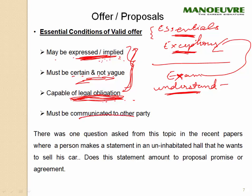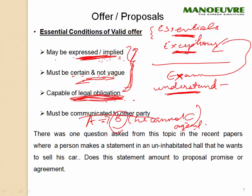The offer must also be communicated to the right party. If A wants to deal with B, he cannot communicate the offer to C — he has to communicate to B only, unless there are exceptions, such as C being an agent of B. There was a recent exam question where A communicated to B 'I will buy your flat,' and B gave his assent through C, who was an appointed agent. The question was: is this acceptance valid? The answer was yes, because C is an authorized person — he is an appointed agent of B.